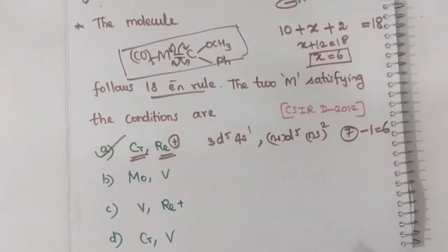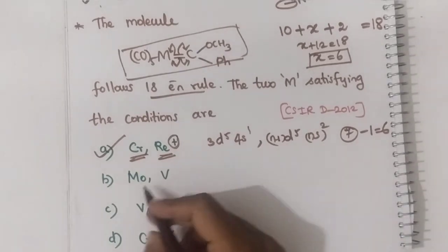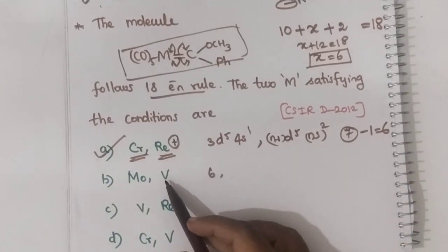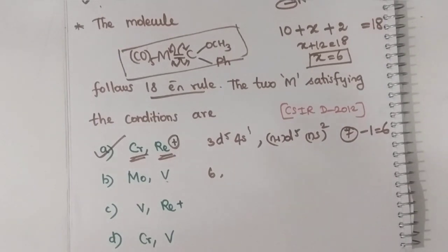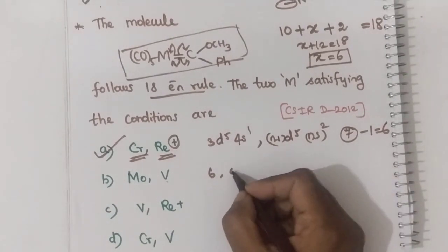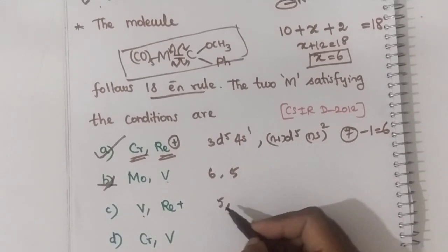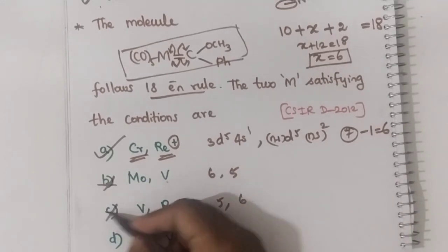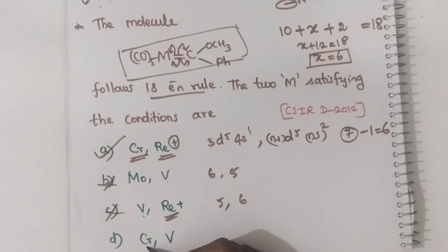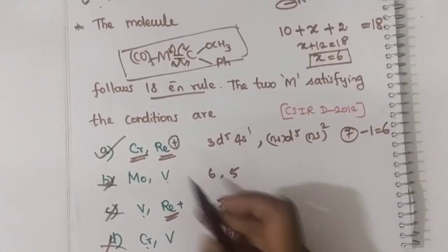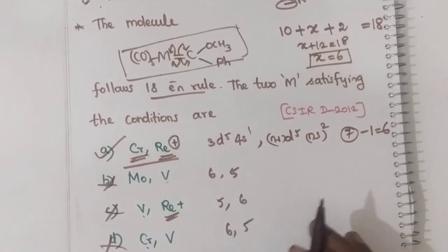Checking the options: vanadium has only 5 valence electrons — not the option. Molybdenum has 6 valence electrons. In option with Cr and V: vanadium = 5, not suitable. The pair with 6 valence electrons in both cases — chromium and rhenium-plus — is the right answer.